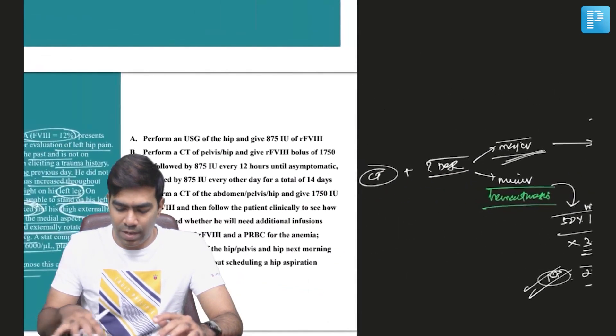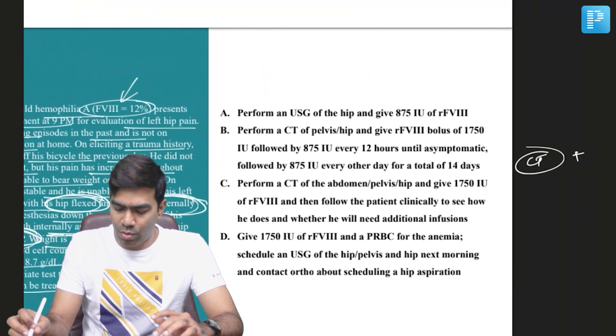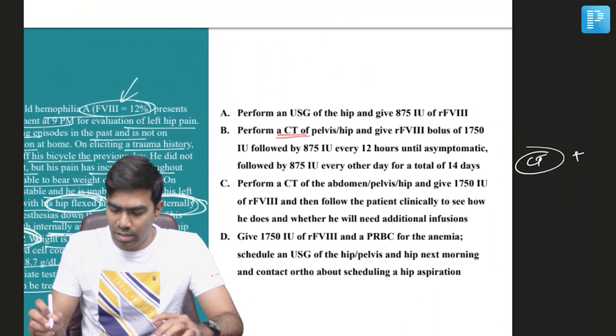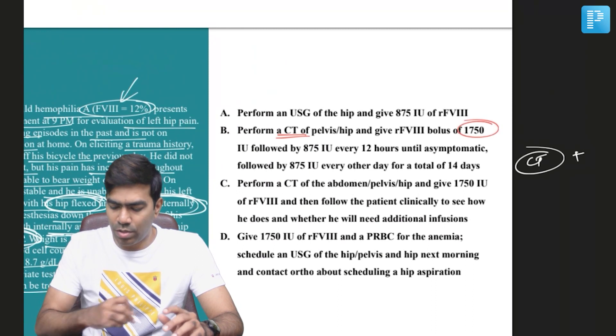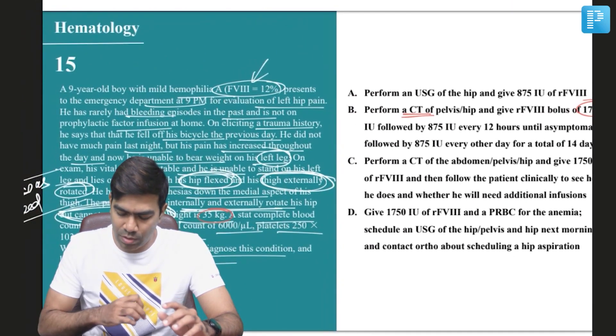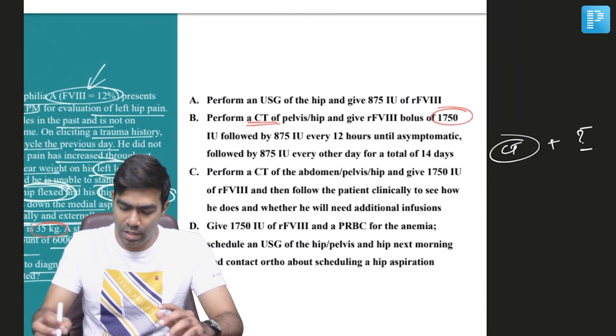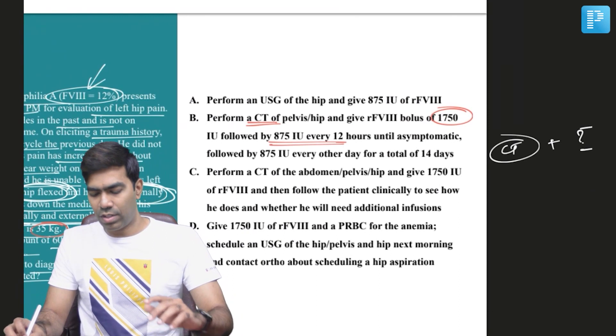So this patient is having a major bleed and having a factor 8 deficiency. So of course I'm going to perform a CT, plus at the same time initially I'm going to give a dose of 1750 units because this patient's weight is somewhere around 35 kilograms. So 35 times 50 units will be 1750.